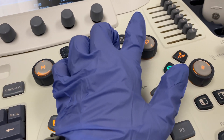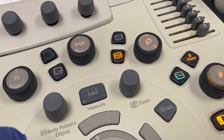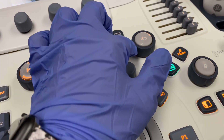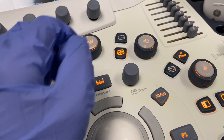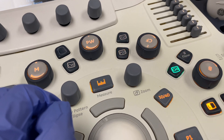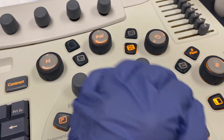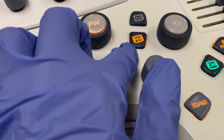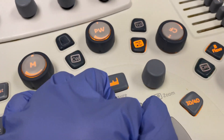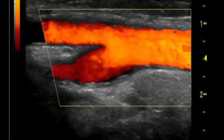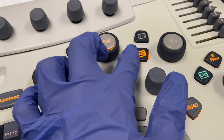And then we use the color flow — that's checking the color, making sure that there's blood flow and movement. The color flow shows directional flow, versus the power Doppler flow, the PDI, which just shows flow in general. It doesn't tell us directional flow, but it just shows there's movement, motion, and flow.